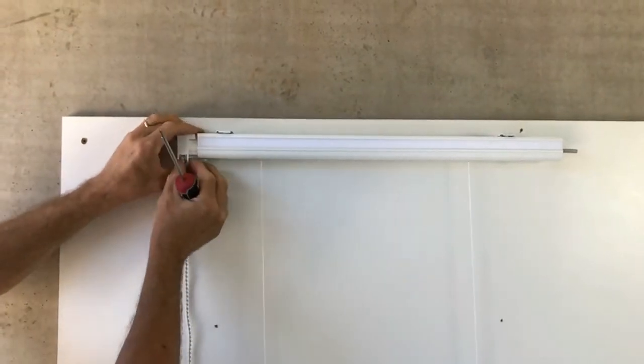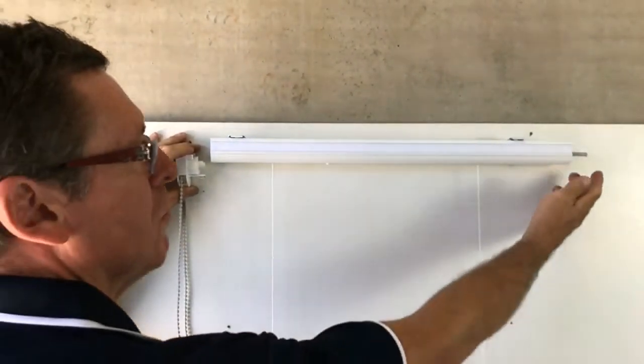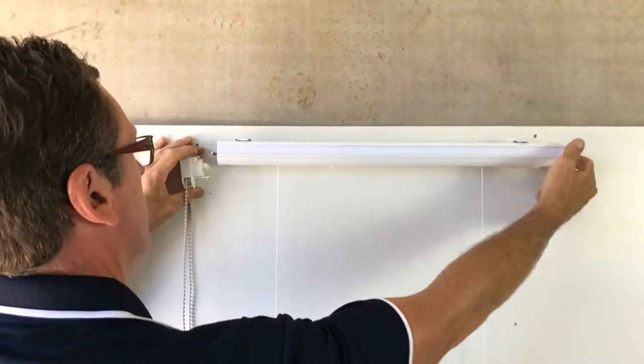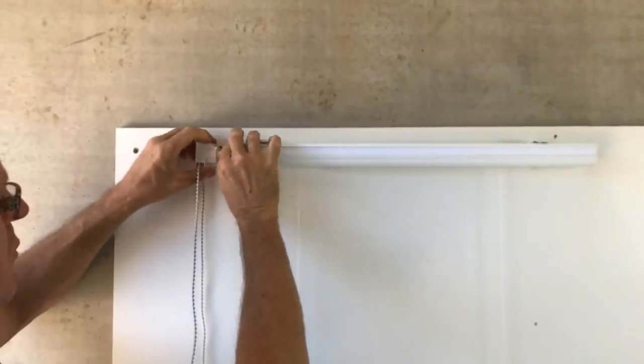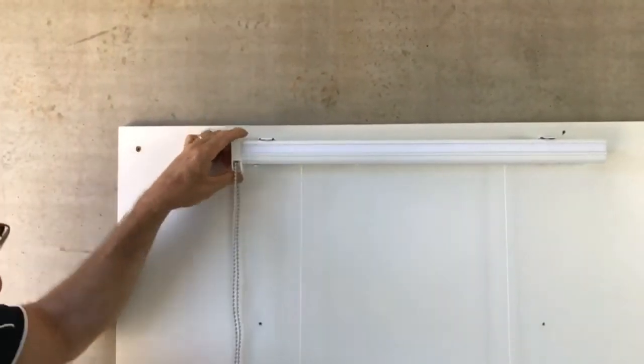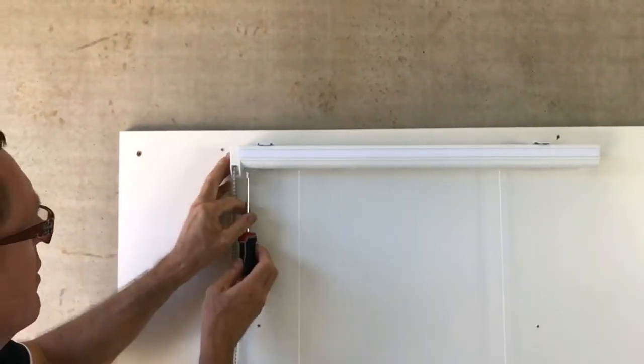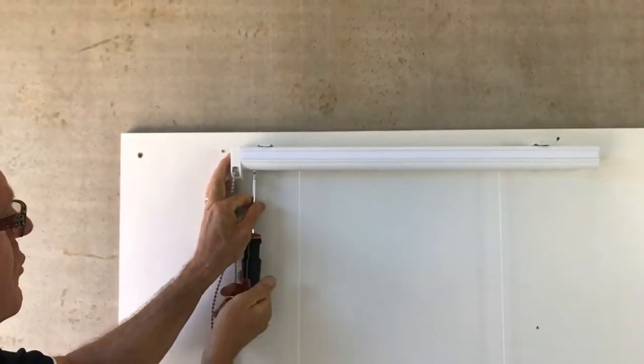We can take the control unit out, push the bar all the way through as we did before, pop the control unit onto the bar, push it back in, and do the screw up.